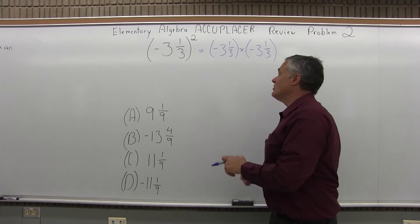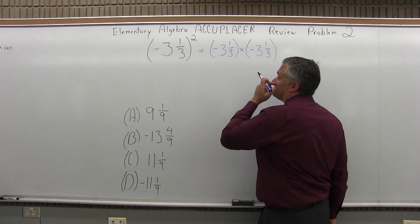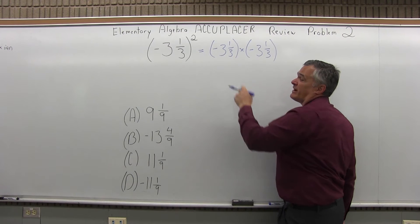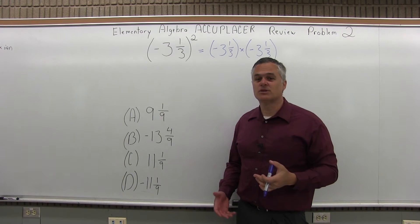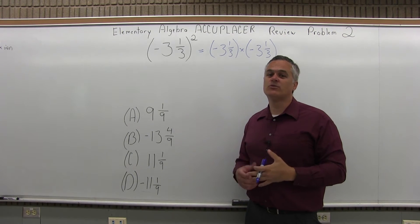Now, to multiply fractions, they can't be in this mixed number form with a number and a fraction. We have to convert them so that it's only a fraction, only a numerator and a denominator.